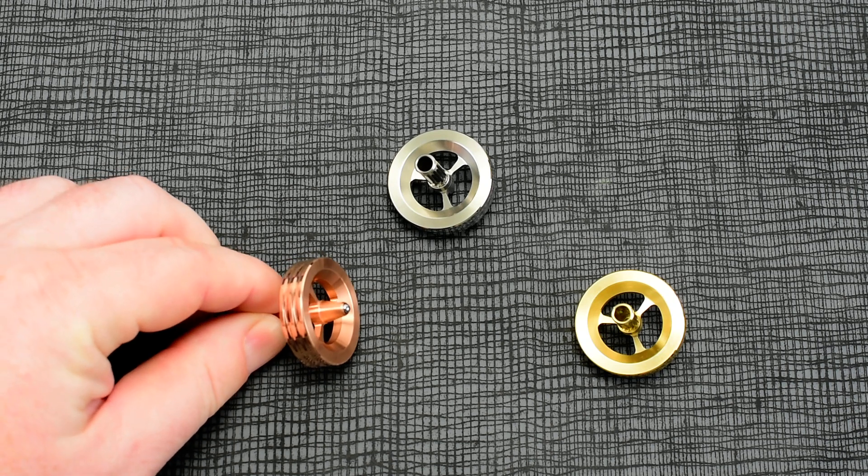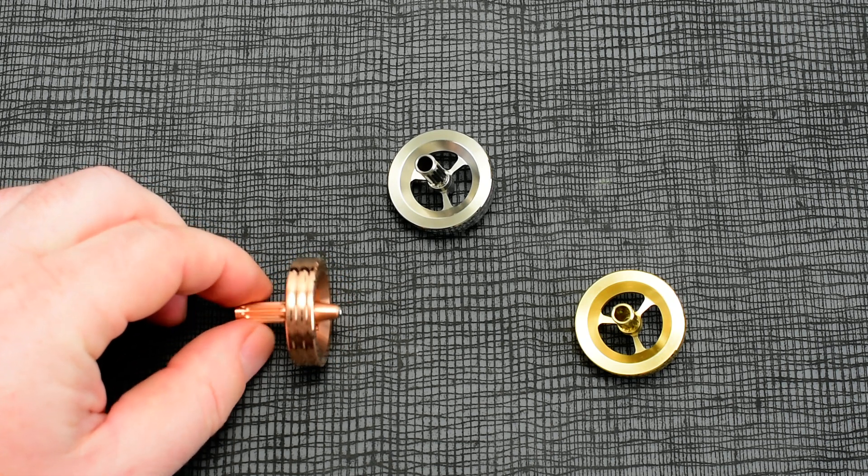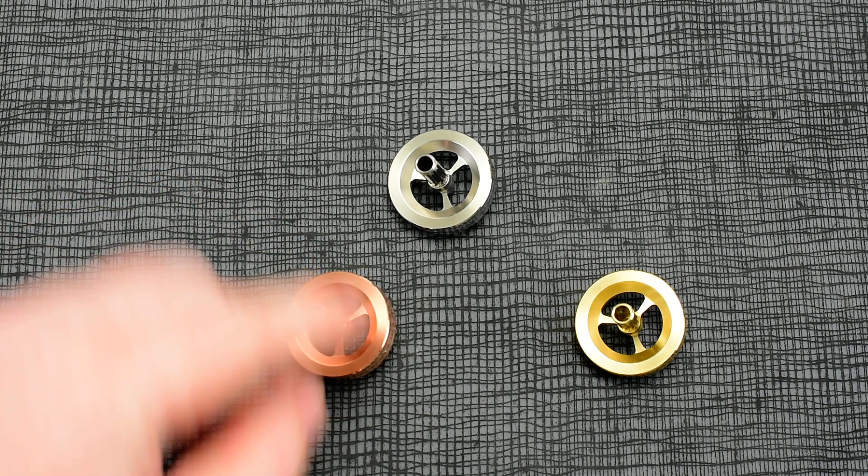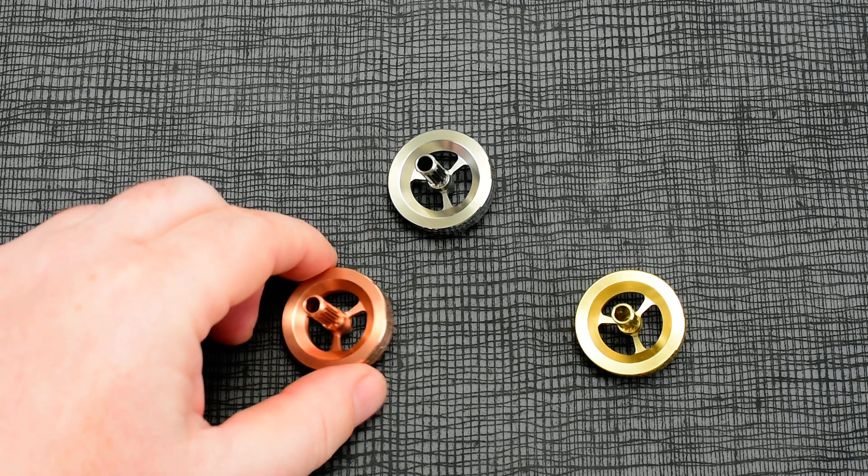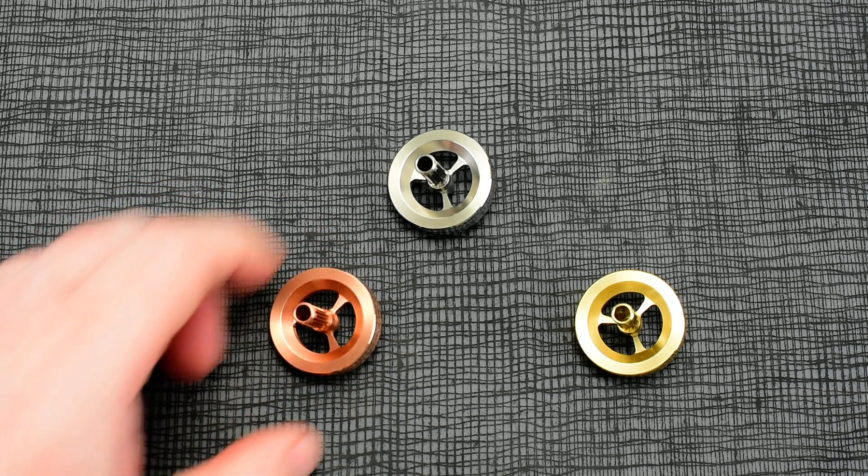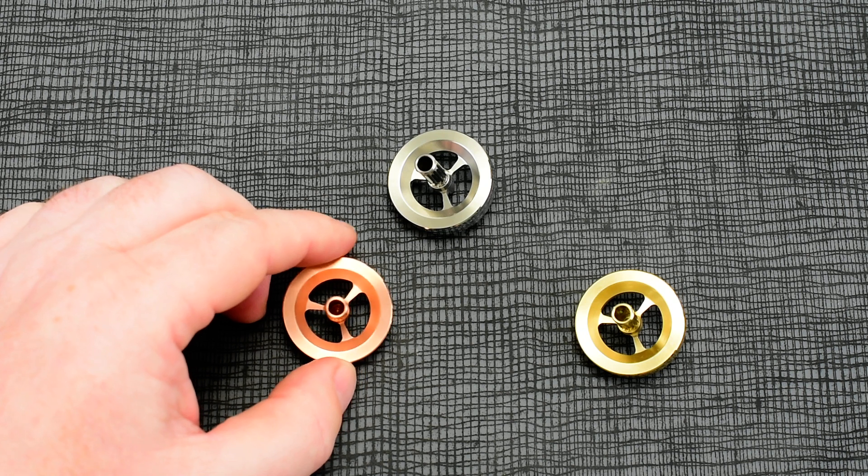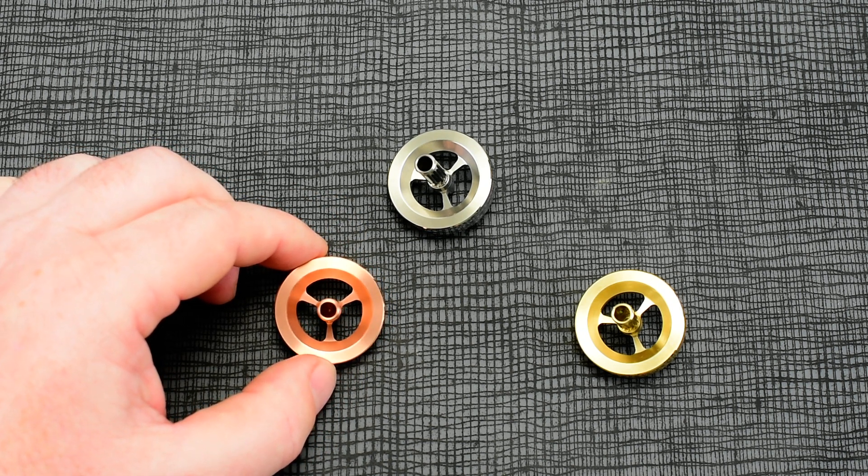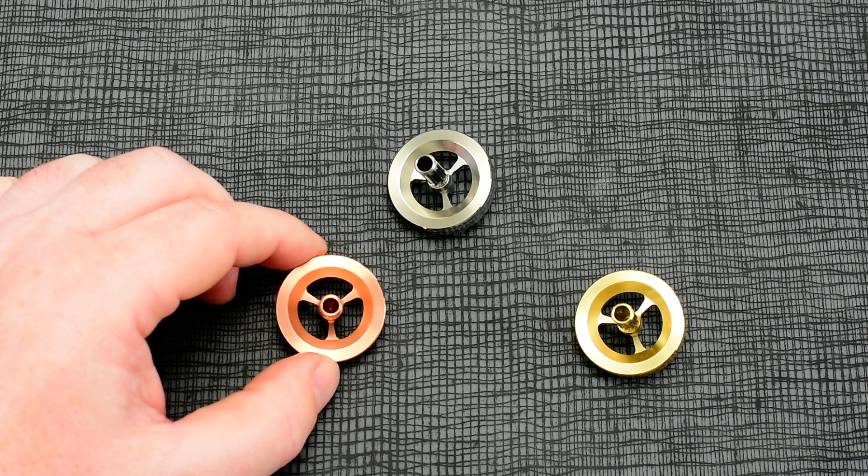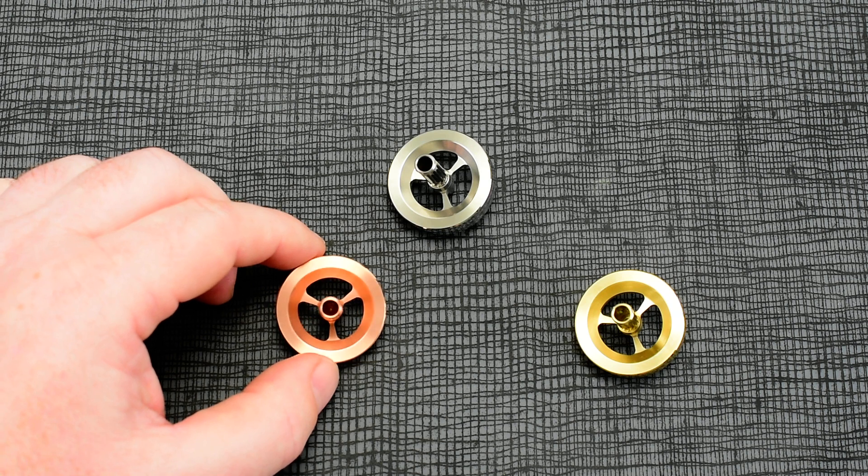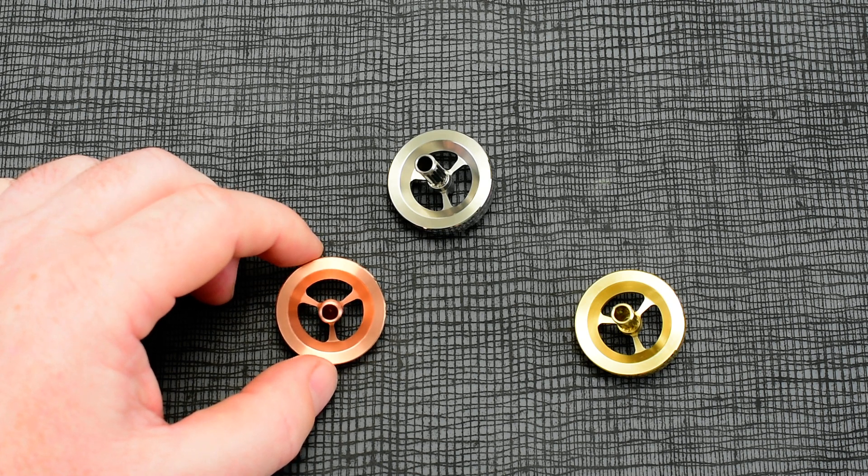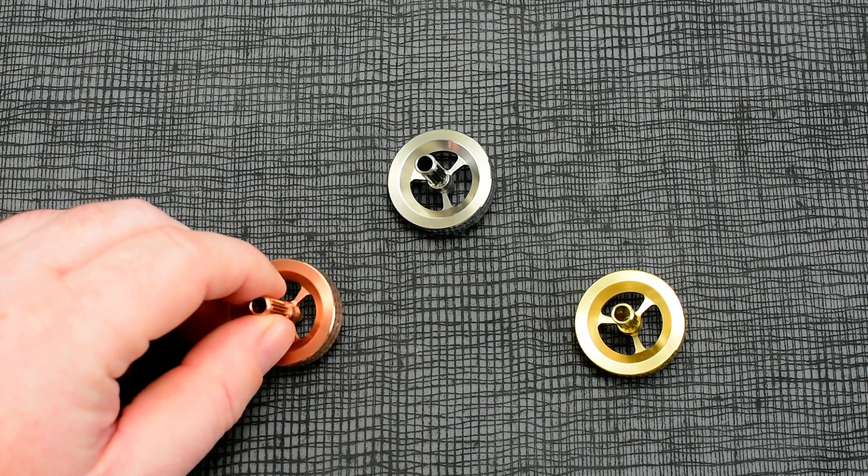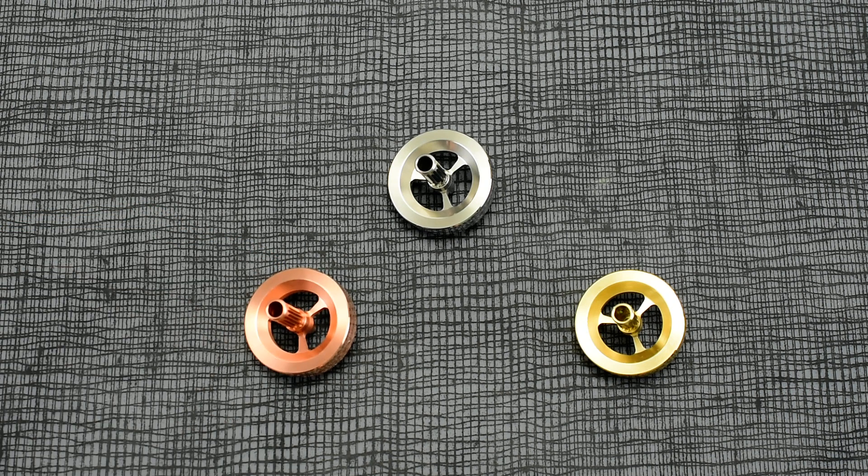The bottoms are exactly the same as the version one. In fact, the whole top is exactly the same as version one, other than the spokes. We changed the spokes because the version one spokes looked pretty much identical to a top that Jordy Wallace from Focusworks had made, and I would hate to ever infringe on another maker's design, so we changed it up and made the version twos.